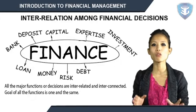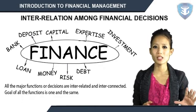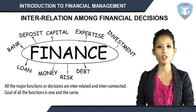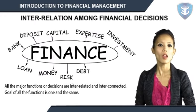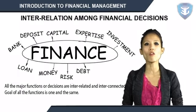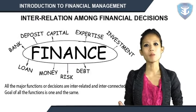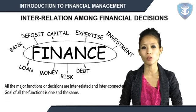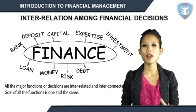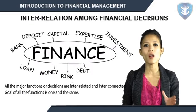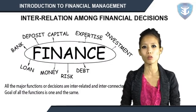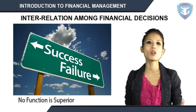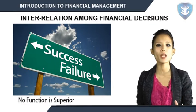Interrelationship among financial decisions: all the major functions or decisions — investment function, finance function, liquidity function, and dividend function — are interrelated and interconnected. They are interrelated because the goal of all these functions is one and the same: the ultimate objective is the achievement of maximization of shareholders' wealth, or maximizing the market value of the share. All the decisions are also interdependent, and no function is superior — importance depends on the situation of the firm.